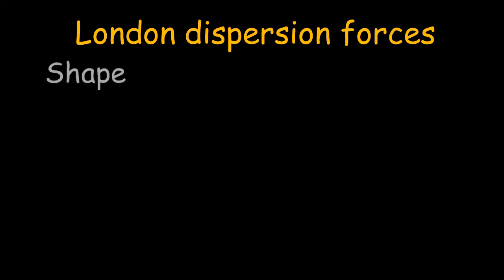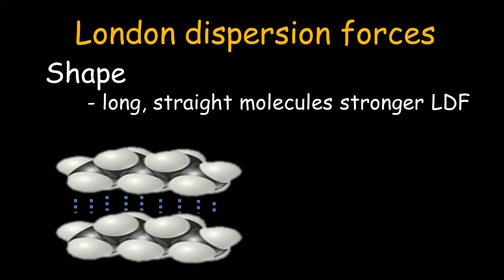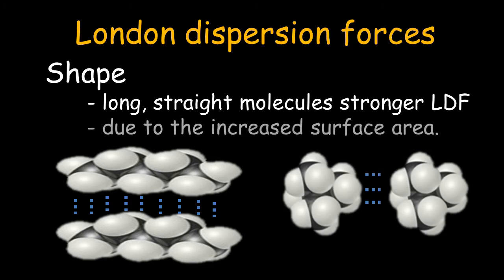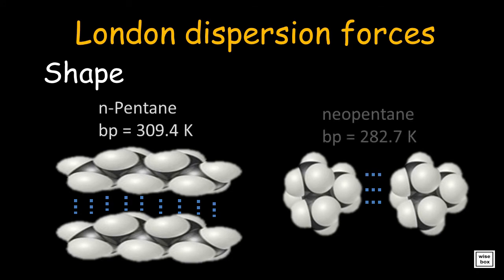The shape of the molecule affects the strength of dispersion forces. Long, skinny molecules tend to have stronger dispersion forces than short, fat ones, due to their increased surface area of attraction. This effect can be observed in the higher boiling point of n-pentane compared to neopentane — linear, straight molecular structures have higher boiling points than rounded ones of similar molecular weight.